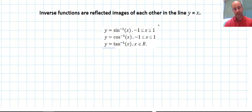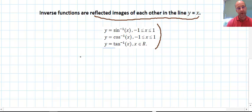I'm going to have a look at the graphs of inverse sine, inverse cos, and inverse tan, and get an appreciation of why the domains are specified as such. With inverse functions, inverse functions are reflected images of each other in the line y equals x. That's not just for trig, that's for any function. So when we've got y equals sine x, the inverse function is x equals sine y.